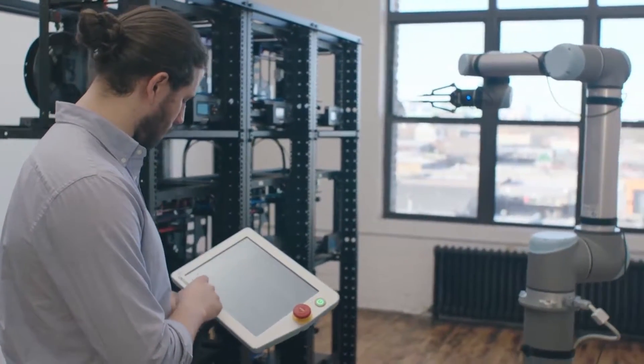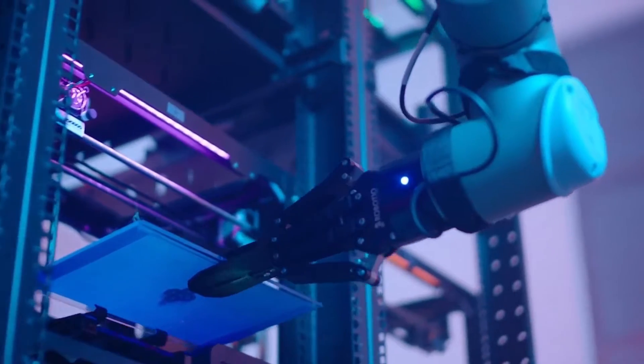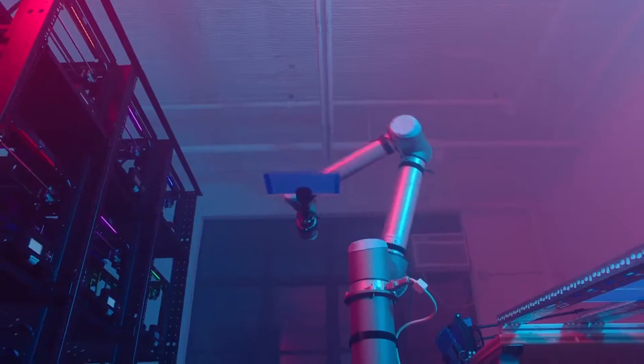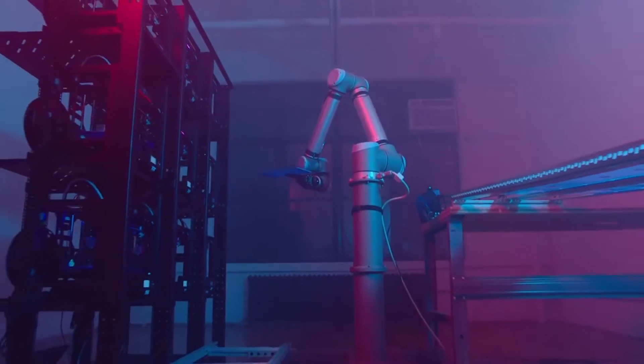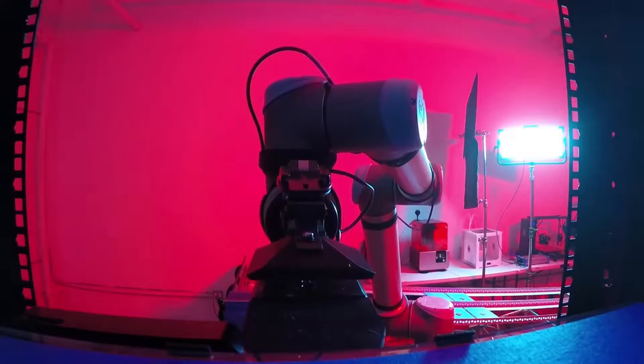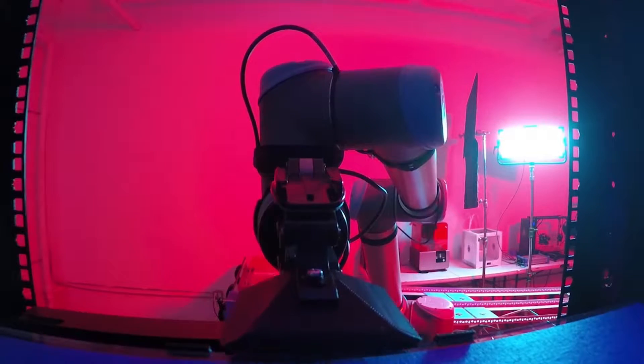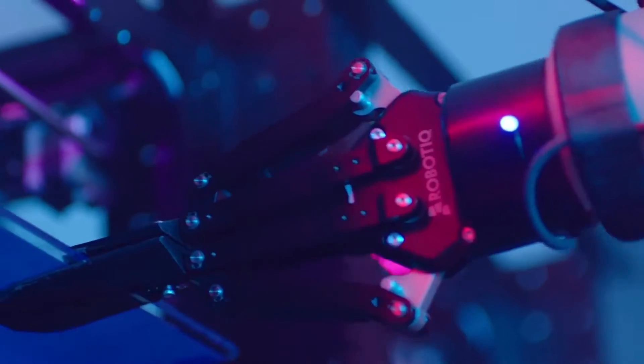Robots tend to the 3D printers in an operation they call harvesting. A robot grabs a plate out of the 3D printer, pulls it out of a special harness, and drops it onto a conveyor. It grabs a new plate, places it in the 3D printer, and restarts it.